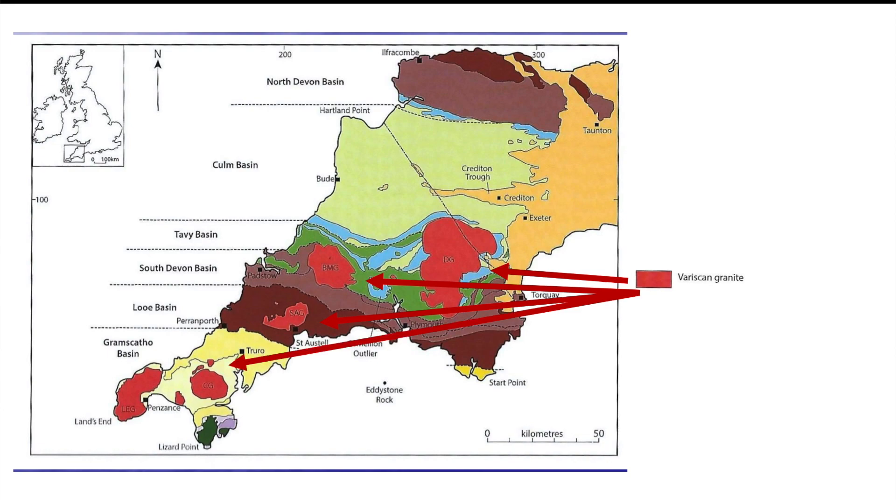This Orogeny creates Pangea, the supercontinent we are very familiar with, where all the continents are together — it's where we have stuff like the dinosaurs.